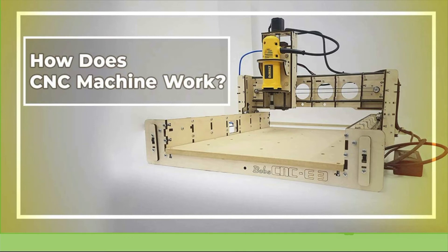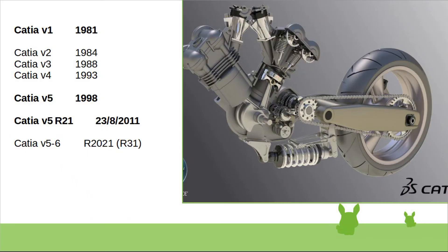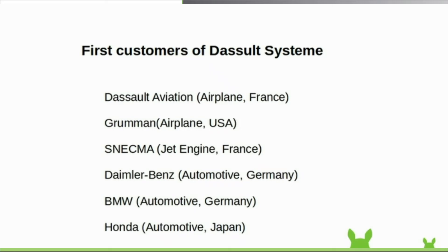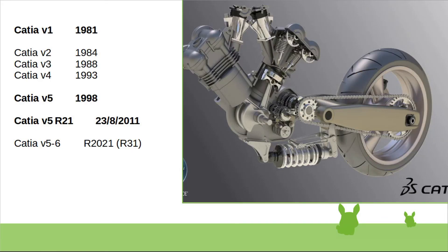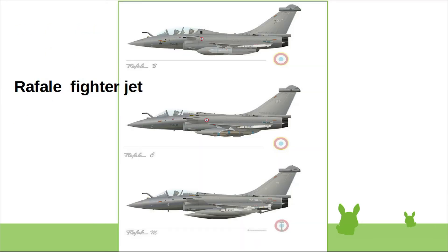So he decided to use computers to solve this problem by developing CAD software for design and manufacturing work. Development of the software was started in 1981 and the first version was released in 1982 as CATIA Version 1. Version 2 was released in 1984, Version 3 in 1988, Version 4 in 1993. CATIA became most popular and many big companies were using it as their main software. The most popular version, CATIA V5, was released in 1998. In this video course I am using CATIA Version 5 R21, released in 2011.